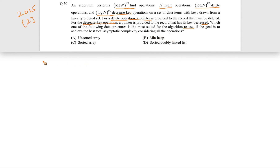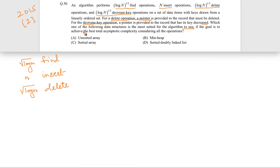To summarize: we have √(log n) find operations, n insert operations, √(log n) delete operations, and √(log n) decrease-key operations. These are the four operations and their respective counts — how many times each operation has to be performed.